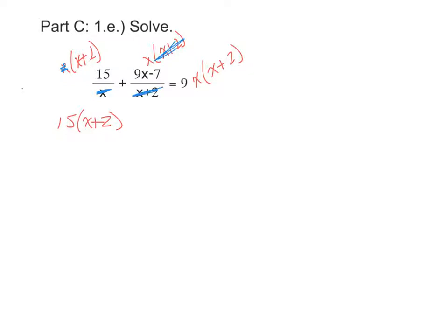But the entire numerator of 9x minus 7 gets multiplied by x. And on the right side, there's nothing that's going to cancel because there's no fraction there. So we'll have 9x times x plus 2.